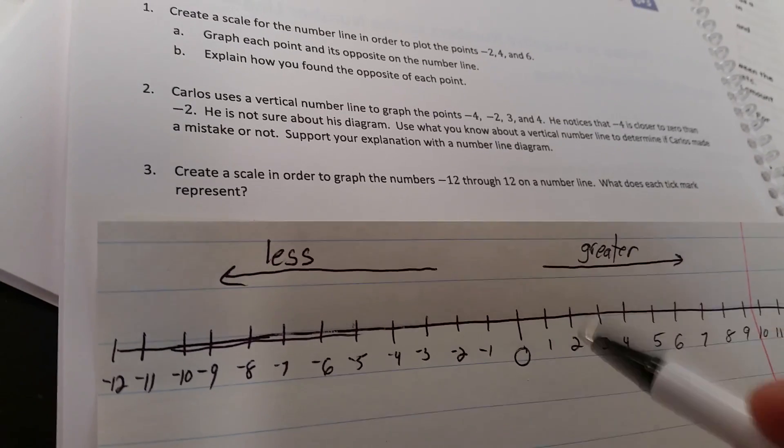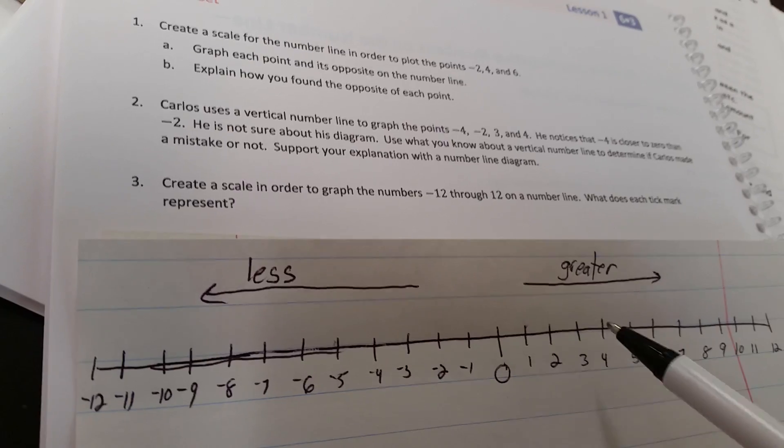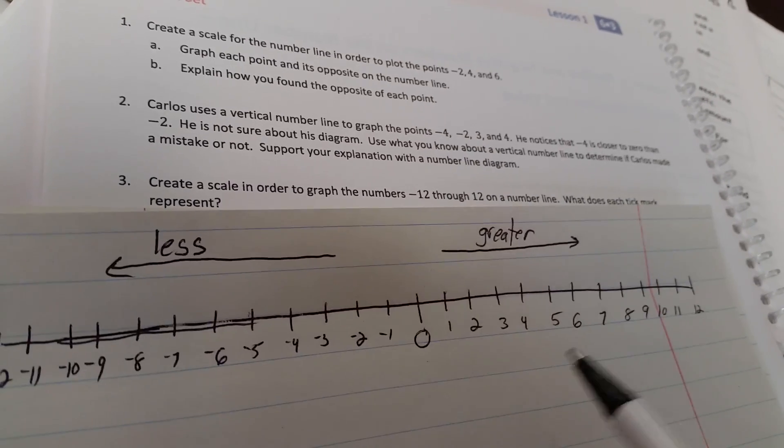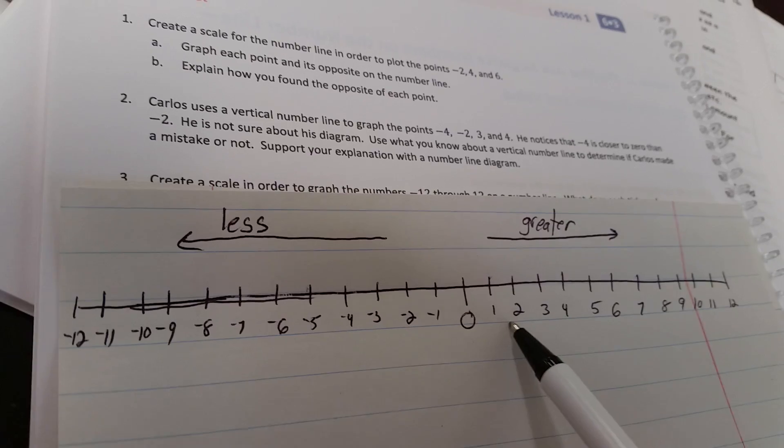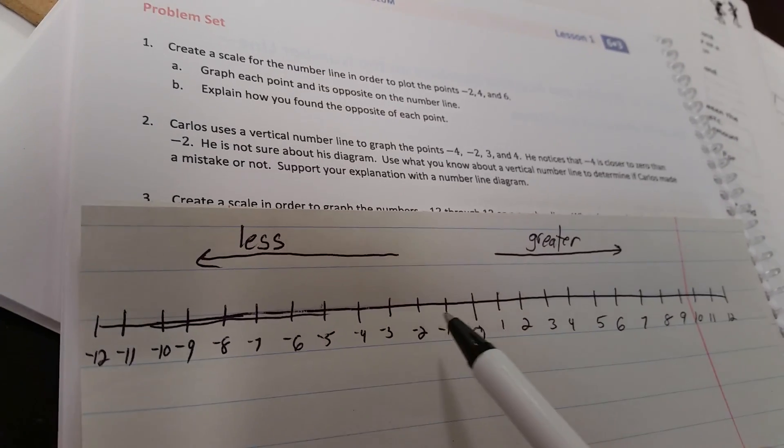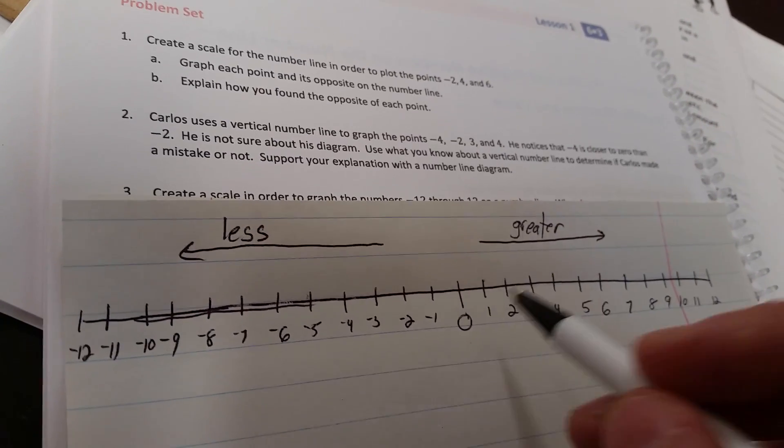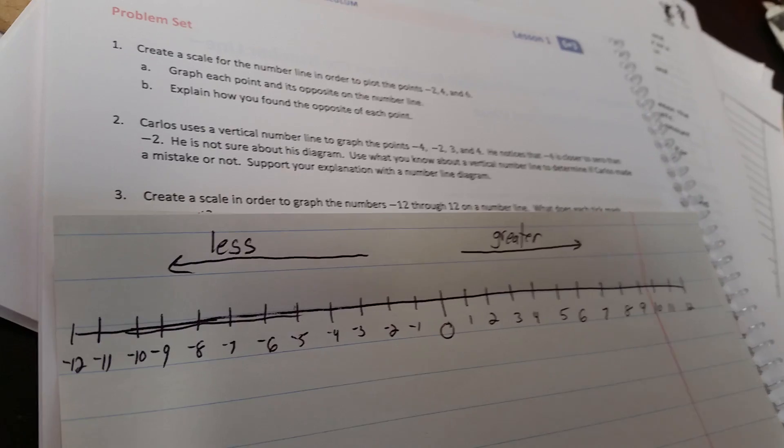Another thing to remember is that you want to have the same scale as you move from mark to mark. So here we're scaling by one-digit intervals: 1 to 2, 2 to 3, 3 to 4, 4 to 5, and the same thing on the negative side. If you want to scale by 2s, that's fine as well, but it needs to be consistent on both sides.